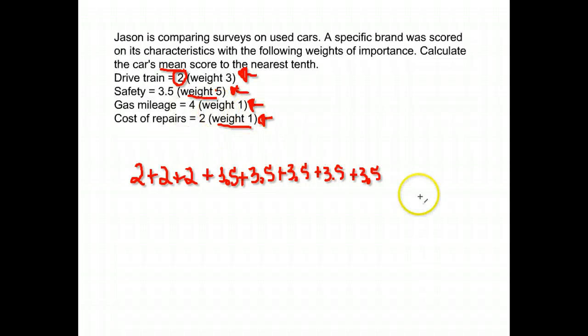The next one had a rating of four, but it was only weighted one, so I'm only going to put one four. And the final one was a two, but it only had a weight of one, so I'm only going to put one there. And then I divide by how many there are.